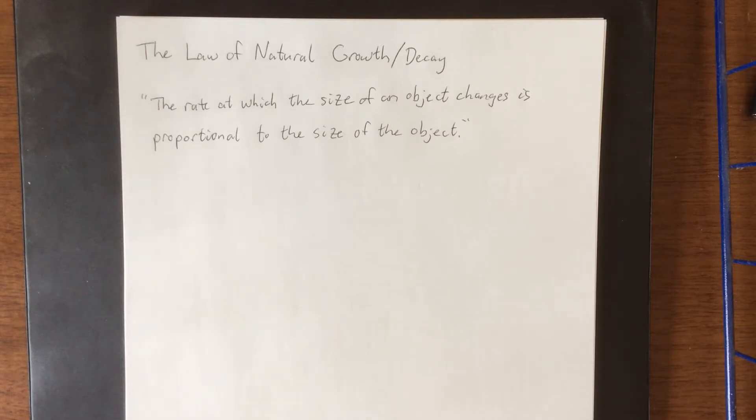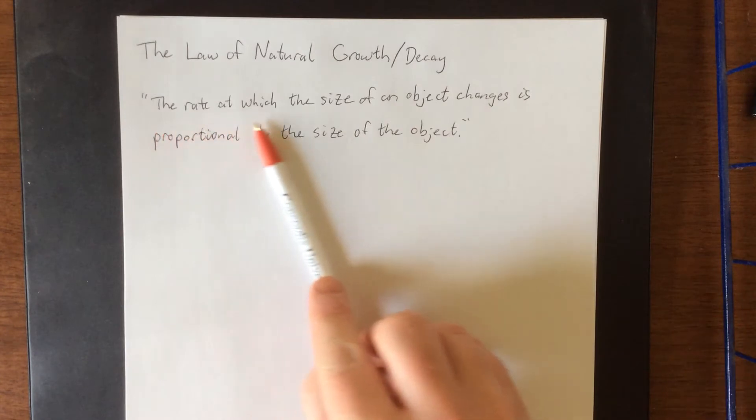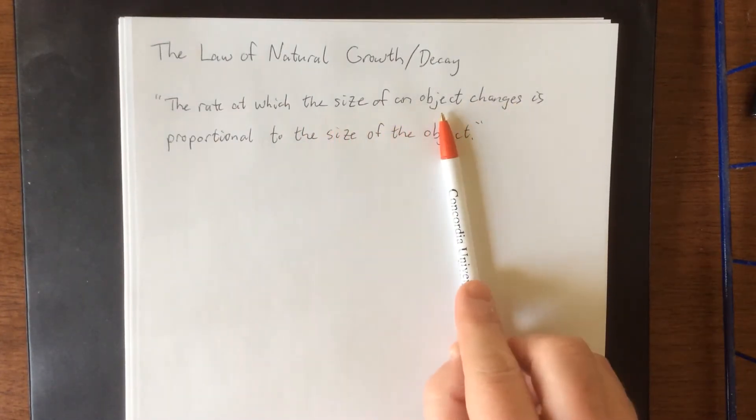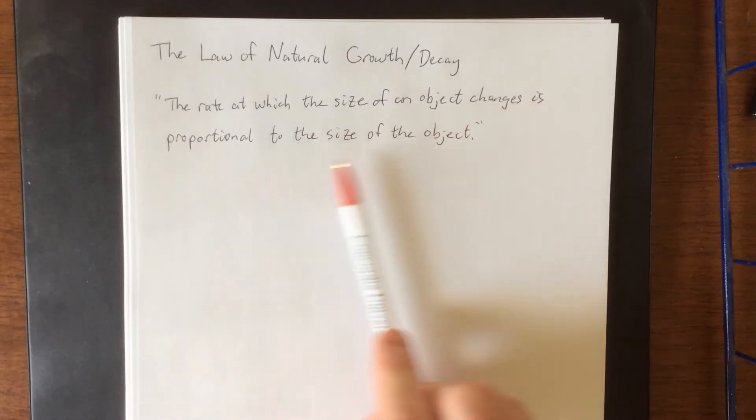The law of natural growth or decay states that the rate at which the size of an object changes—that could be a population, that could be a mass of a radioactive element, could be lots of things—is proportional to the size of the object.